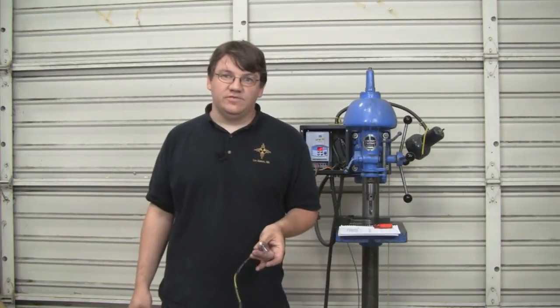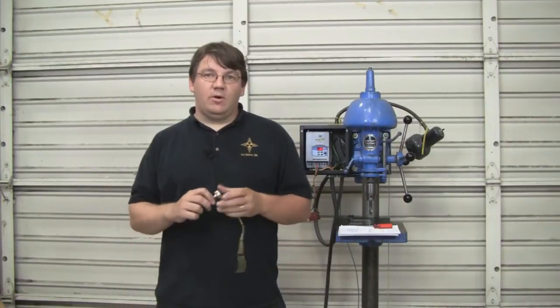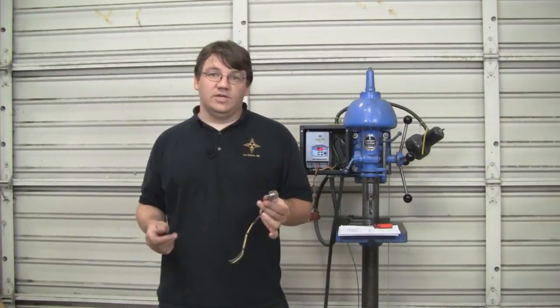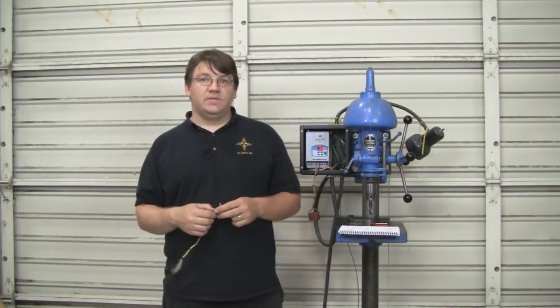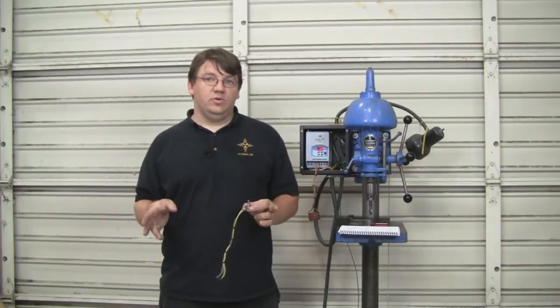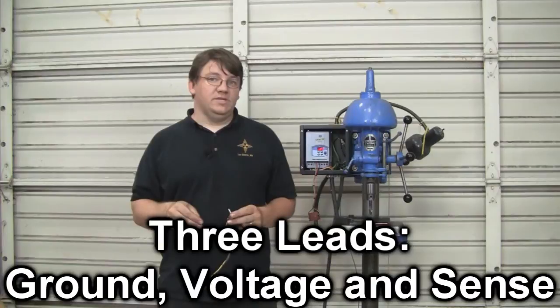There are many different kinds of potentiometers available on the market. There's rotary, linear, or even ones hooked up to a foot pedal. Now I've chosen a rotary for this particular application, but your standard potentiometer is going to have three different leads on it. We'll call these one, two, and three. Generally the outer two are going to be ground and voltage, and the middle one will be sense.